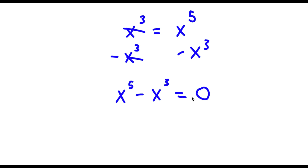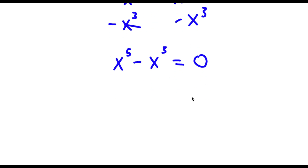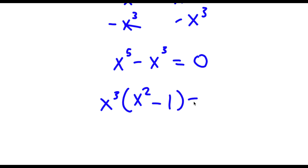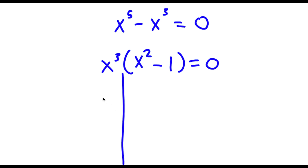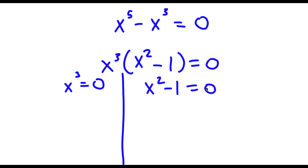Now I'm going to factor out x to the power of 3. So now I have x to the power of 3 times x squared minus 1 is equal to 0. This is going to give me two equations: x to the power of 3 is equal to 0, and x squared minus 1 is equal to 0.